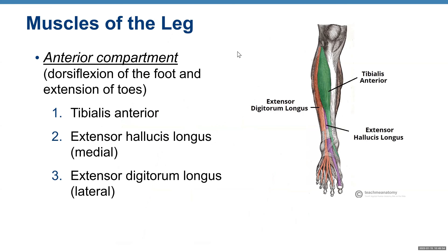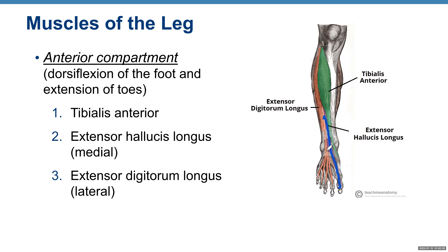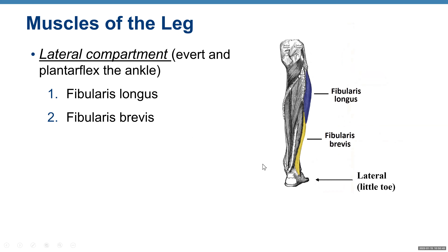Muscles of the leg — anterior compartment. Function: dorsal flexion of foot and extension of toes. Dorsal flexion is when you walk on your heels. Muscles include tibialis anterior, lateral to the tibia bone; extensor hallucis longus, shown in purple, with the tendon going to the hallux or big toe; and extensor digitorum longus, which extends your digits or toes with a long tendon.